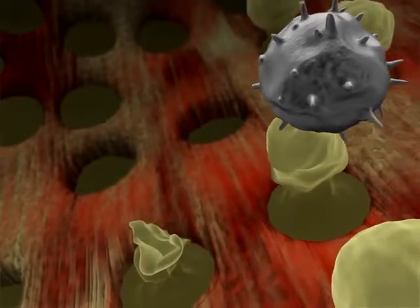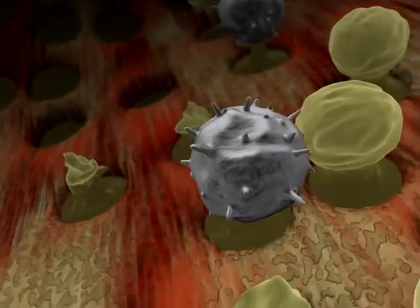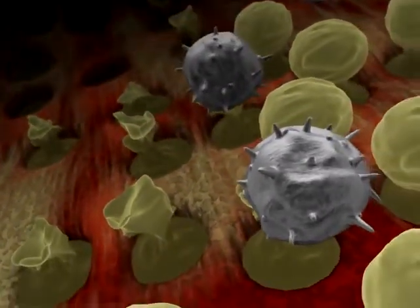When suffering from an autoimmune disorder such as aplastic anemia, lymphocytes become confused and attack the stem cells being created in the bone marrow.